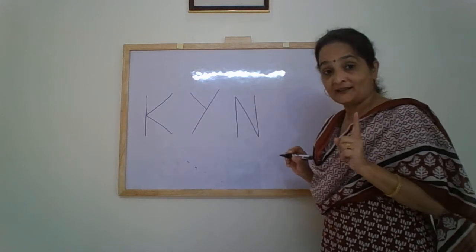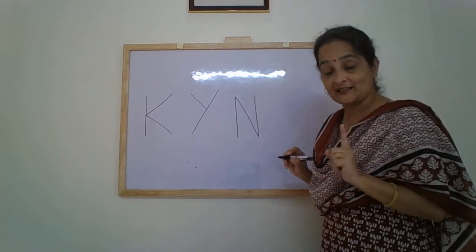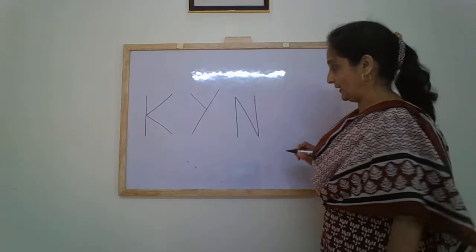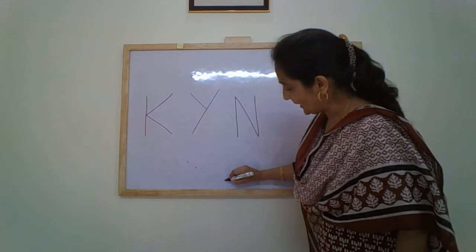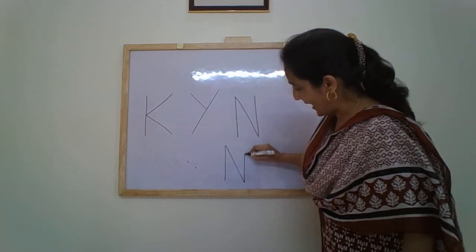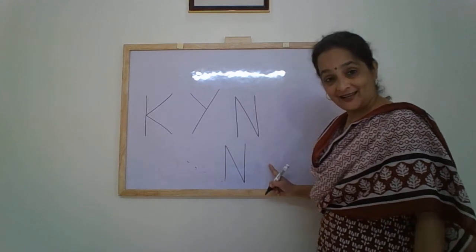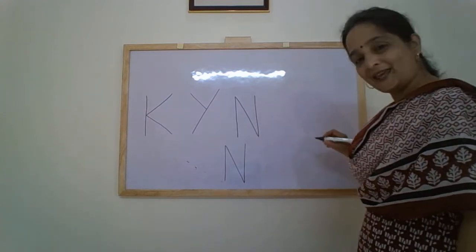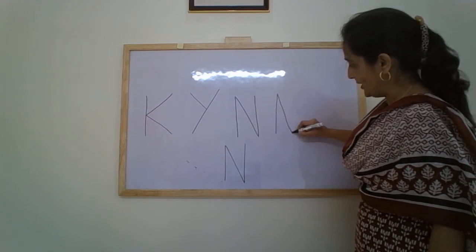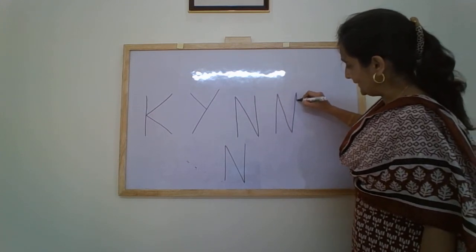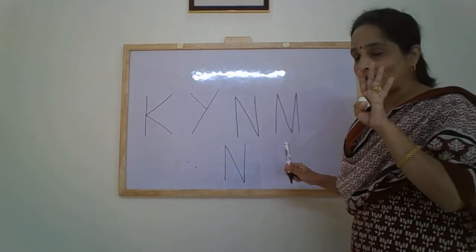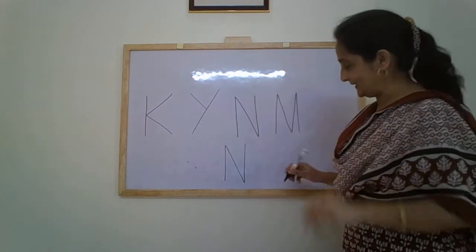We are not making a pattern — we are writing a letter. So you have to count the number of lines that you make. Up one, down two, up three. Letter N. And now letter M — up one, down two, up three, down four. M has four lines and N has three lines.